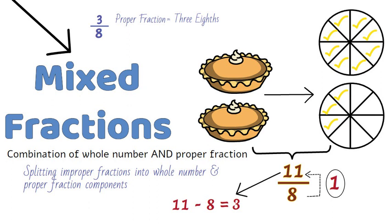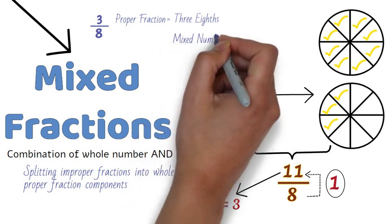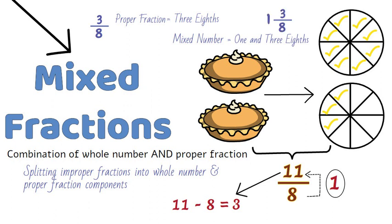Finally, the mixed number would then be 1 and 3 eighths.